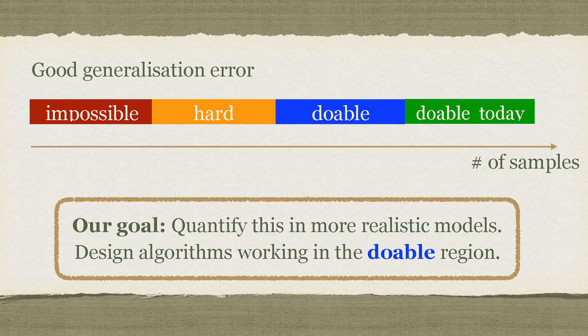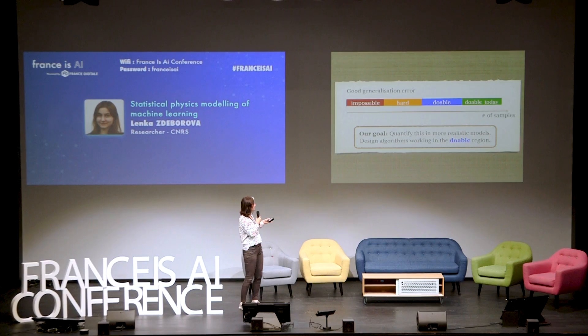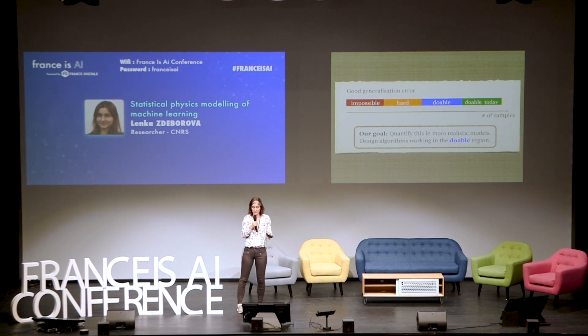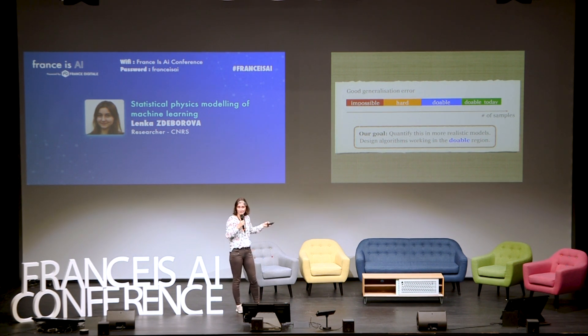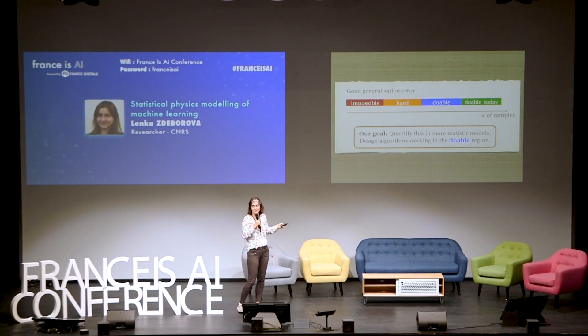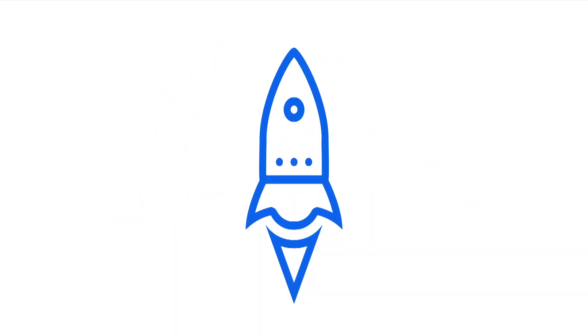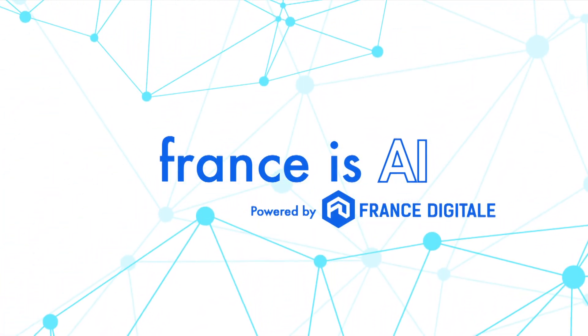My time is up. Just to say there are also algorithmic gaps in this case. To summarize: our goal is, on these simple models made more and more realistic, to characterize a region as a function of sample complexity where information-theoretically things are not possible; then a region where from the computational complexity point of view things are not possible; then a green region where we can do things today; and then a blue region which is doable but where there is still space for improvement of current algorithms. Quantifying these regions in different settings and designing algorithms that work in the blue region — that's our goal for the next few years. Thank you for your attention.